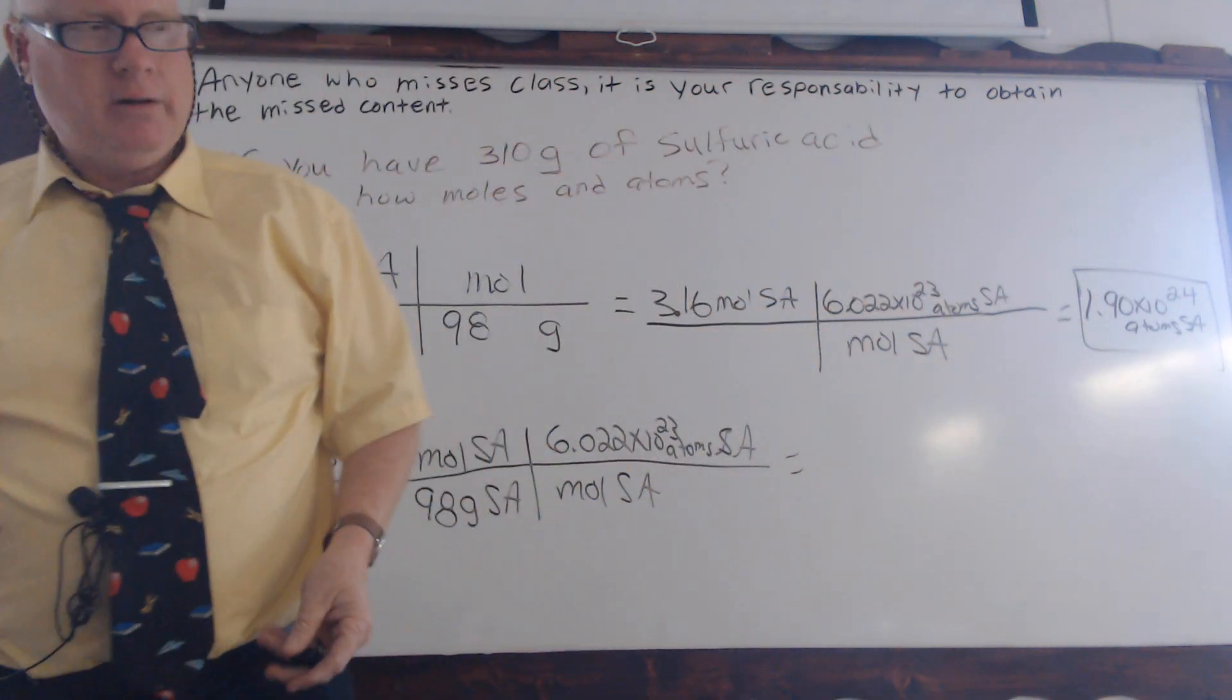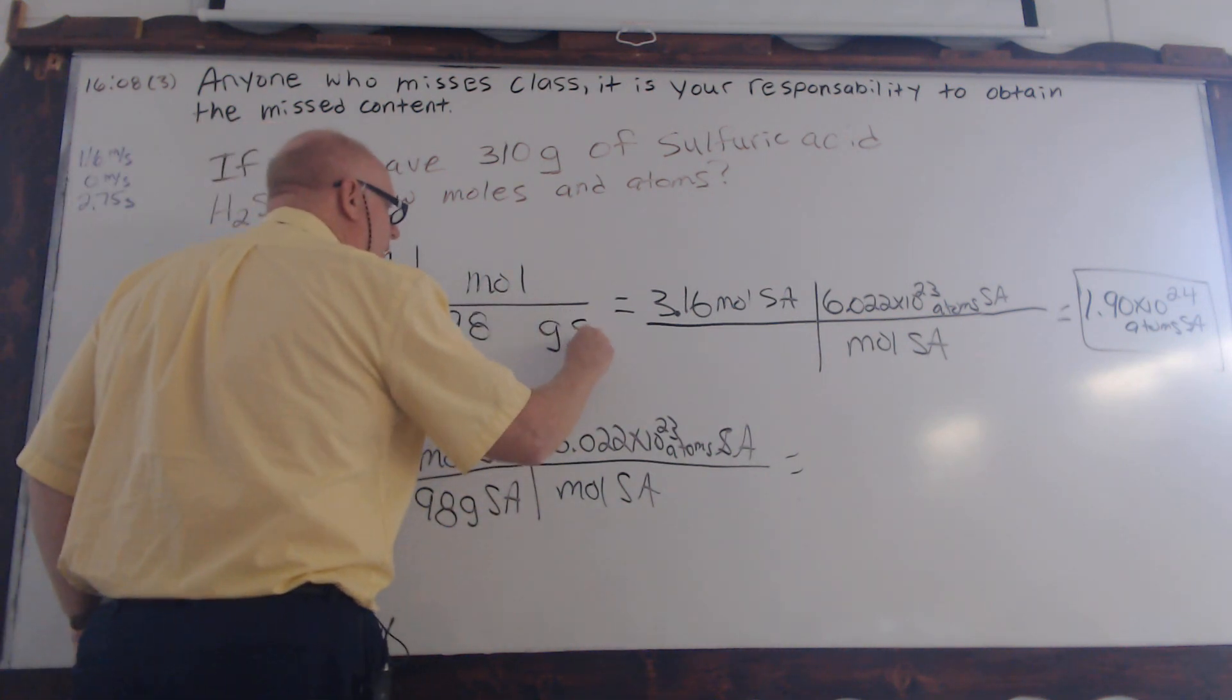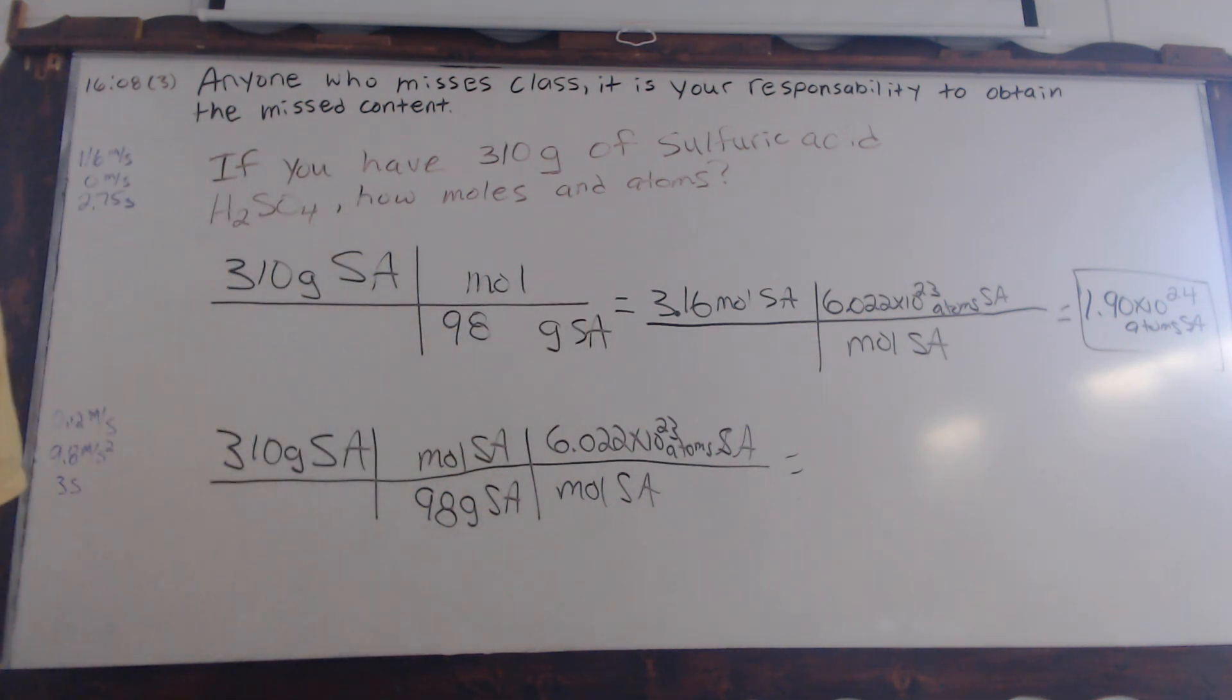You might not get 1.90 exactly, but I would think it would have to be pretty close. And does anyone need a refresher on how to punch in? I must have punched something in wrong. Oh I know what I did wrong. For a physical science problem I had 3.10, just a coincidence, it's 310. Now I bet you that we will get that 1.90. Again the decimals here might be just a little off, but you're going to get the same answer.